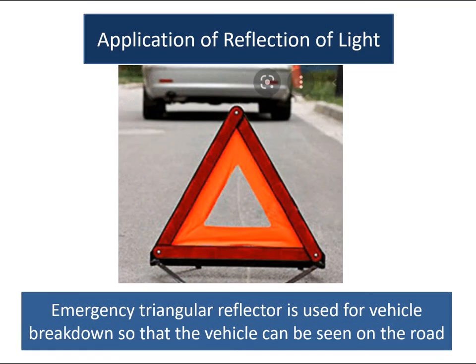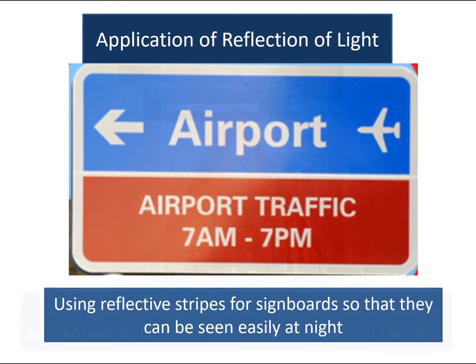The emergency triangular reflector is used for vehicle breakdown so that the vehicle can be seen on the road. Using reflective stripes for sideboards so that they can be seen easily at night.